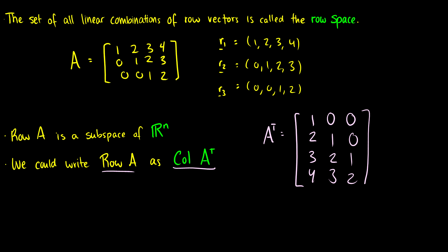Row(A) is going to be a subspace of R^n because the matrices are m by n. So if we have three row vectors and this is a 3 by 4 matrix, then our row vectors will have four entries, therefore it's going to be a subspace of R^n.